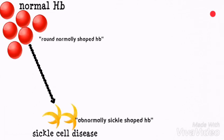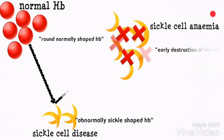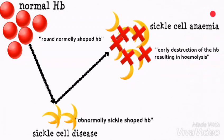Sickle cell disease is a group of inherited disorders that affects the normal hemoglobin, which is the protein molecule in red blood cells that delivers oxygen to all parts of the body. Sickle cell anemia is a type of anemia due to abnormal shaped hemoglobin — thus sickle shaped — which causes red blood cells to be destroyed before their normal lifespan of 120 days, leading to hemolysis. That is why sickle cell anemia is also called hemolytic anemia.